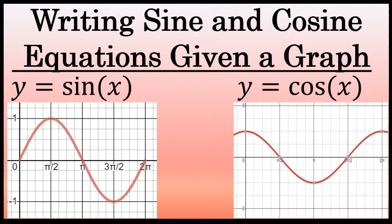On the screen you see the graph of y equals the sine of x from 0 to 2 pi, and the graph of y equals the cosine of x. In both of these graphs, there's not a lot going on — the amplitude of both graphs are 1, the fundamental period in both waves are 2 pi, and there isn't a vertical shift in either graph. In this video, I will talk about writing the equations of sine and cosine waves given their graphs, even when there is a change in amplitude, a change in fundamental period, and a vertical shift.